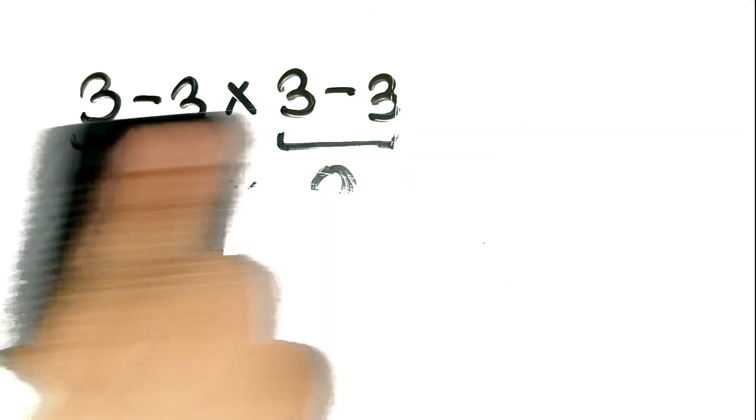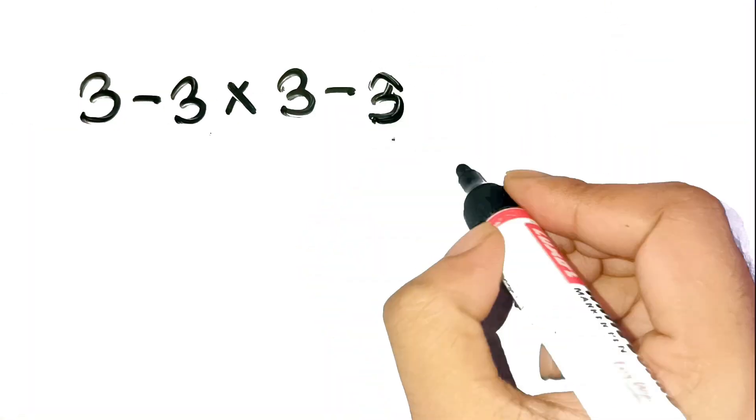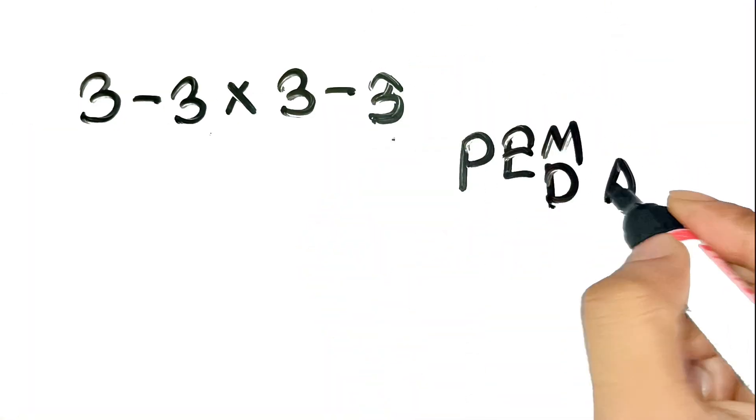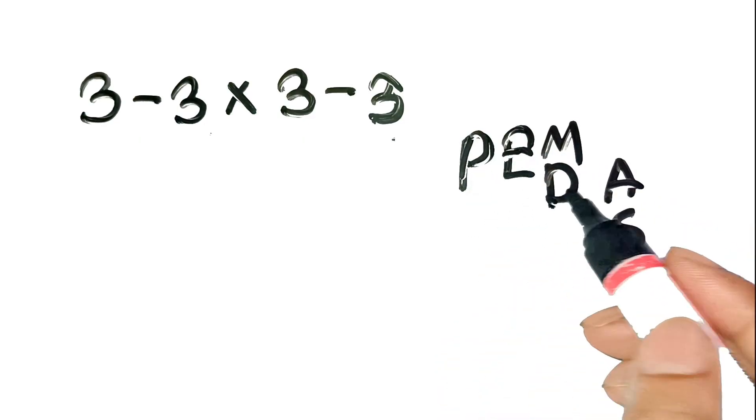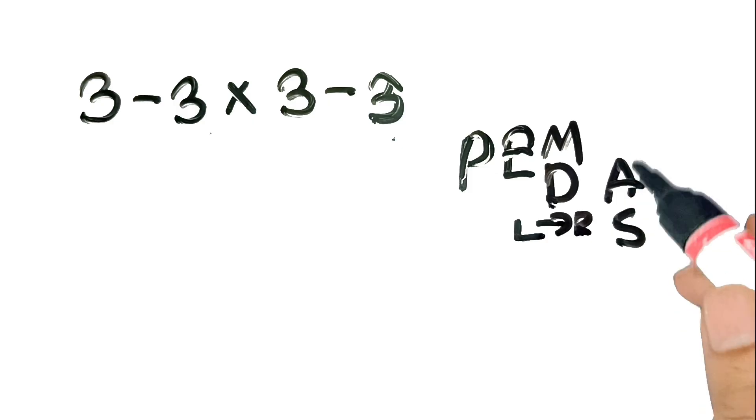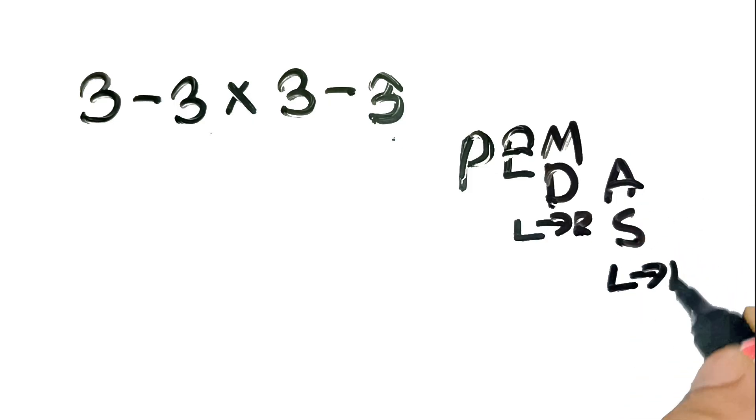Here's the twist. The correct approach is all about PEMDAS, which stands for parentheses, exponents, multiplication and division left to right, addition and subtraction left to right.